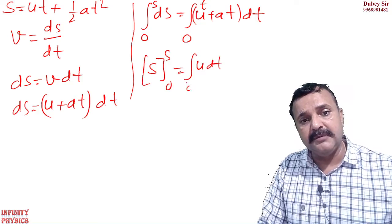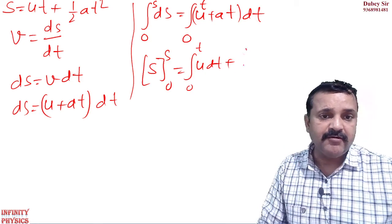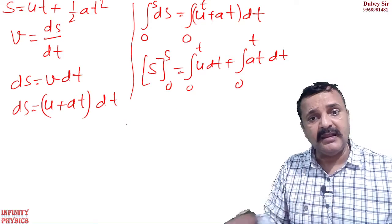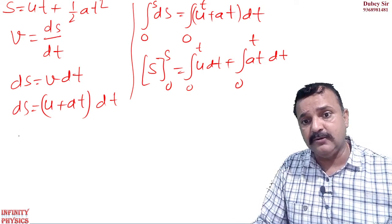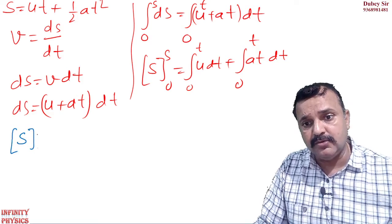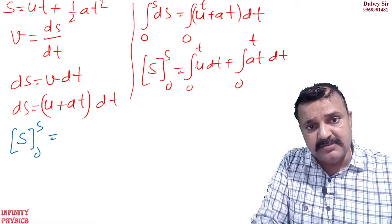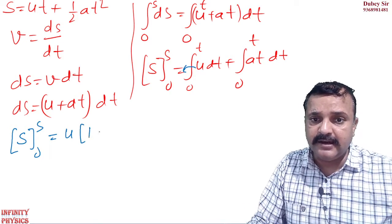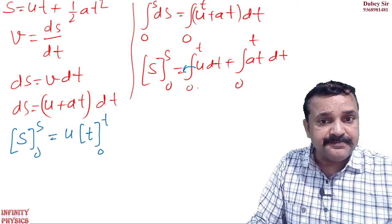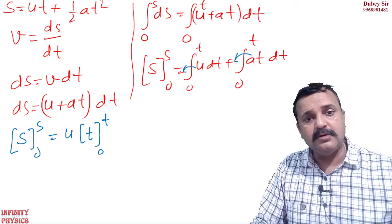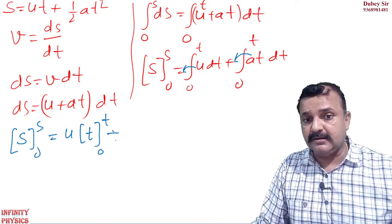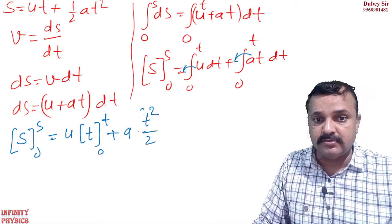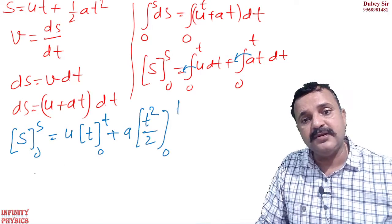U integration of U Dt. Limit zero to T likho ghe. Plus integation A T Dt. Limit zero to T likho ghe. Clear hai? It's very very important. S ki limit ho ghe zero to S. U common lelou. Dt ka integration kya hoga ghe? T. U common lelou ghe. T. Dt ka ho ghe T. Limit zero to T. Yaha se A common lelou. T Dt ka integration kya ho jayega? Jab A common lelou ghe T Dt, T Dt kya ho jayega? T square by 2.